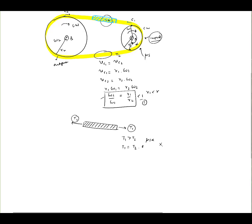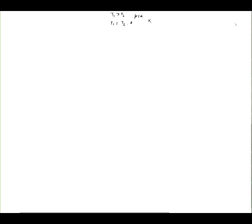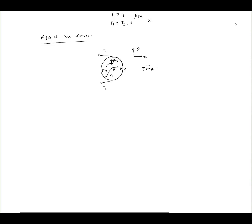What we want to ask is: what are we gaining on? We lost angular velocity going from input to output — are we gaining something else? Let's draw a free body diagram of the driver — the smaller pulley at point A with radius R1. We have reaction forces and a moment M1, plus tensions T1 and T2. Taking the sum of moments about point A equal to zero: M1 equals (T1 minus T2) times R1. That's equation 1.